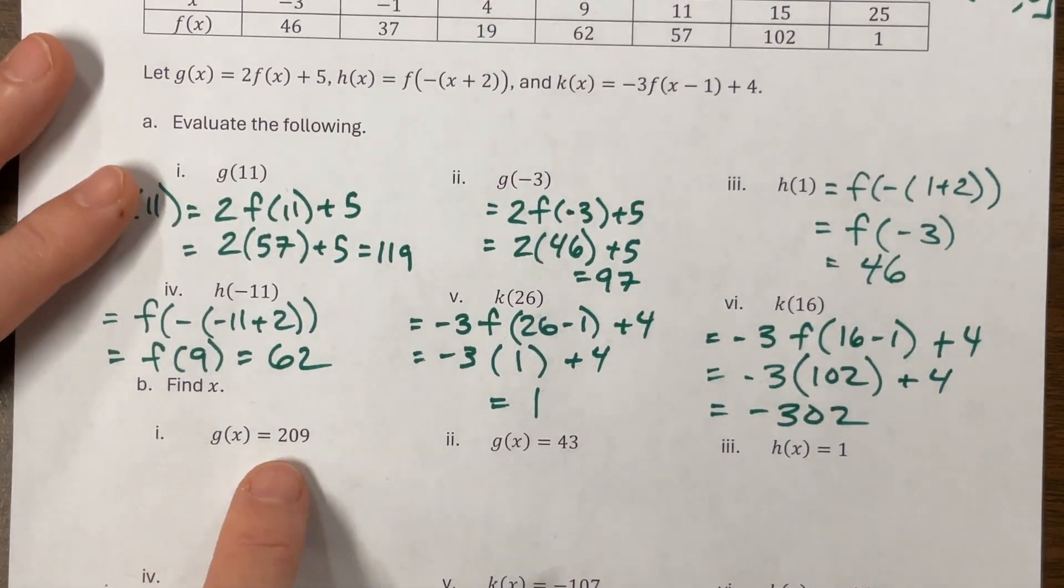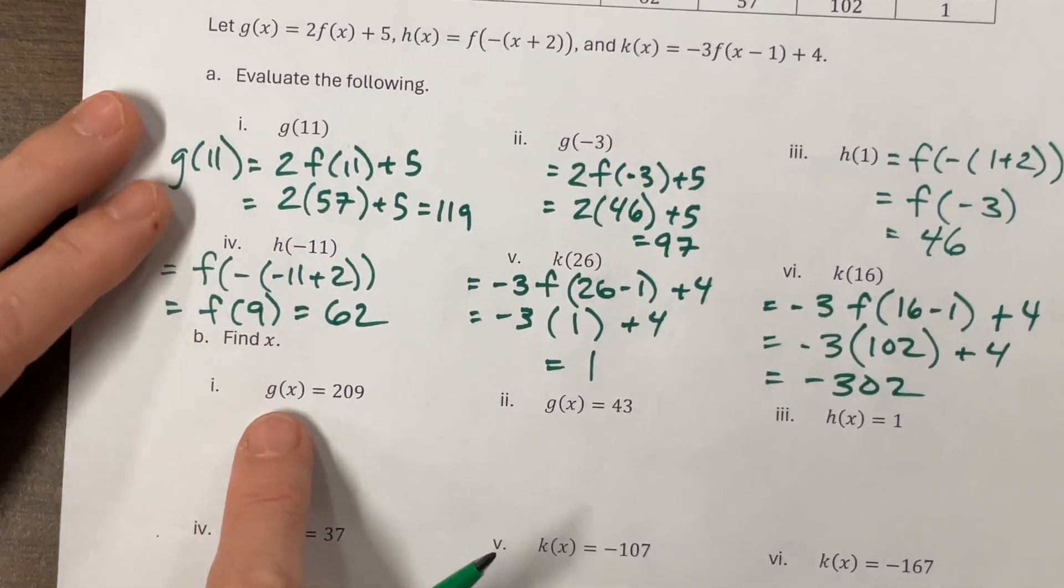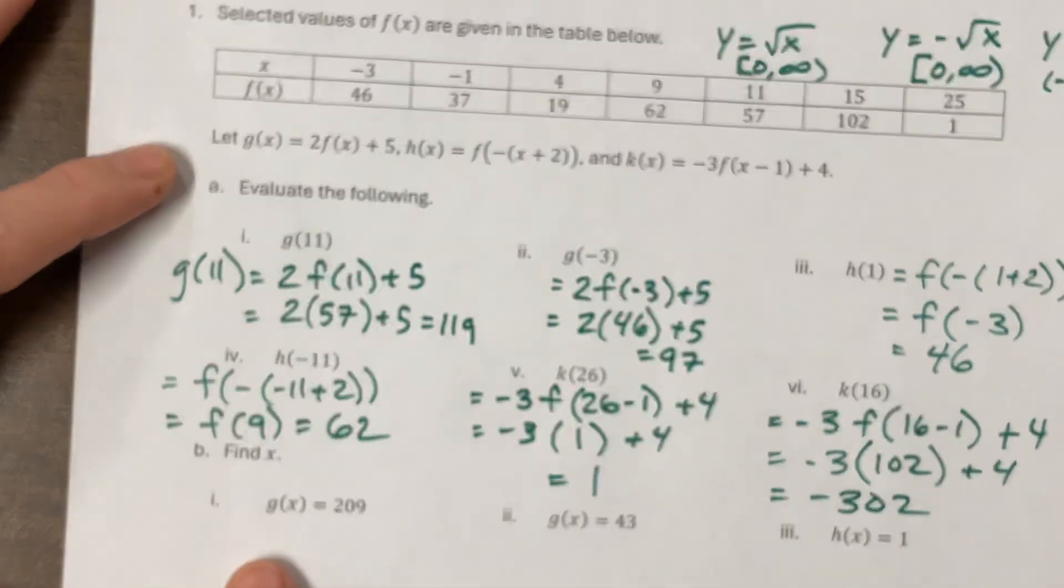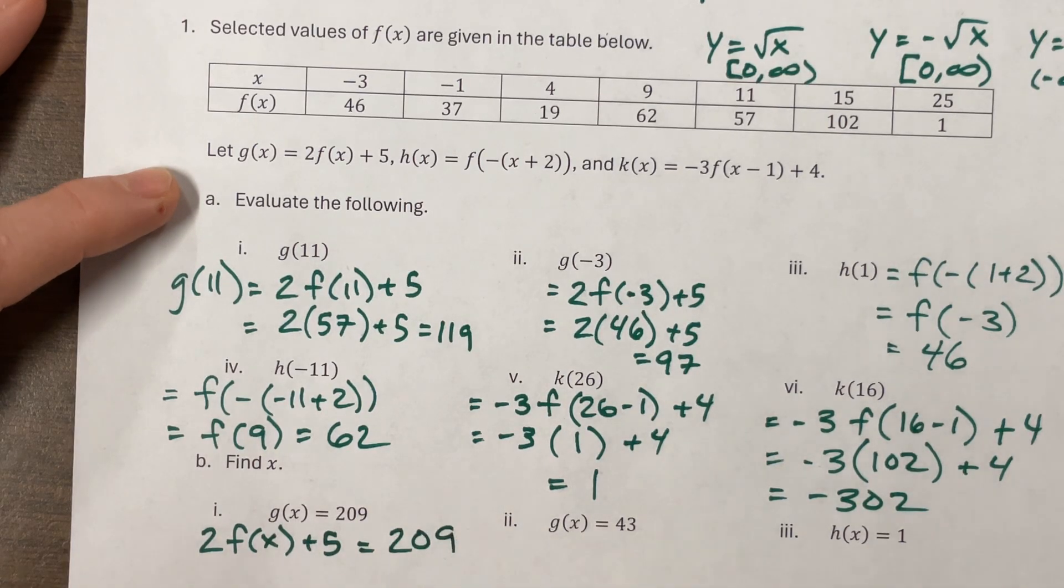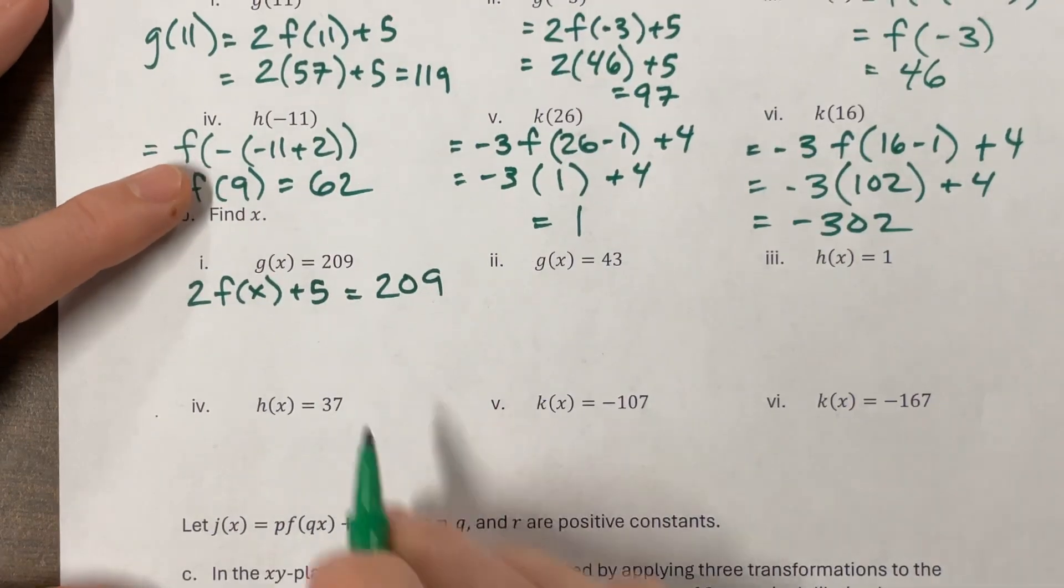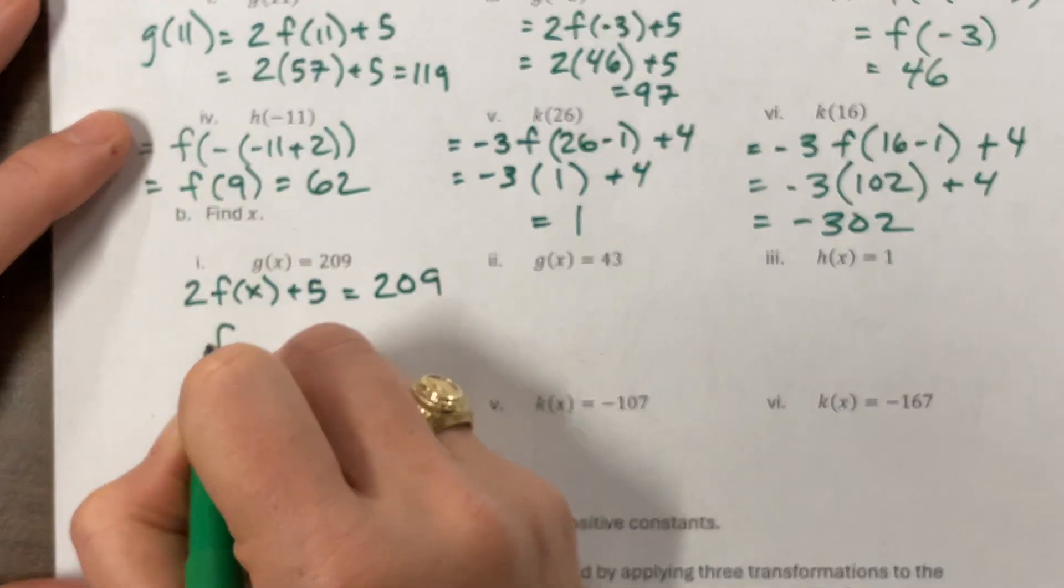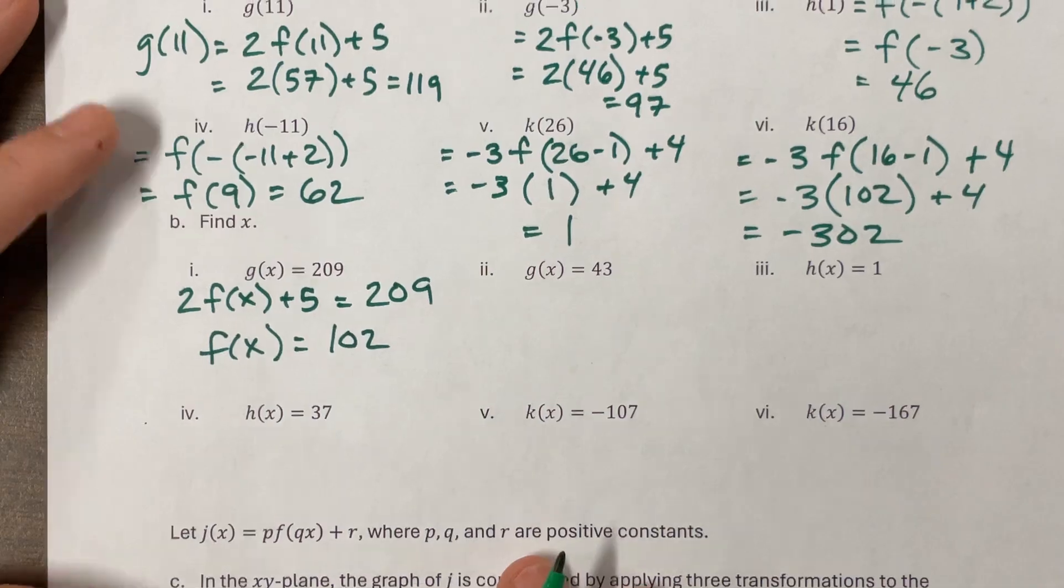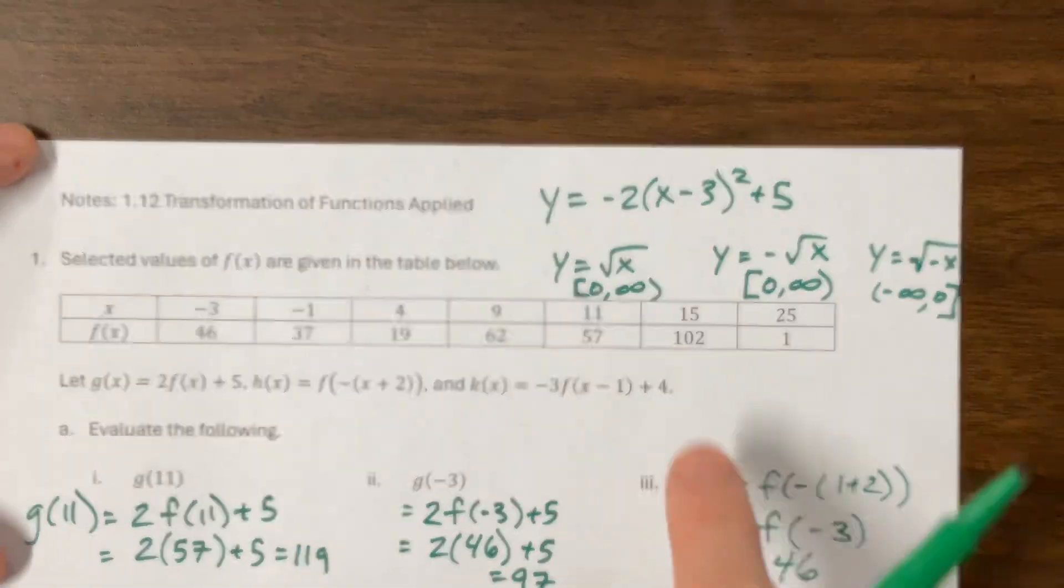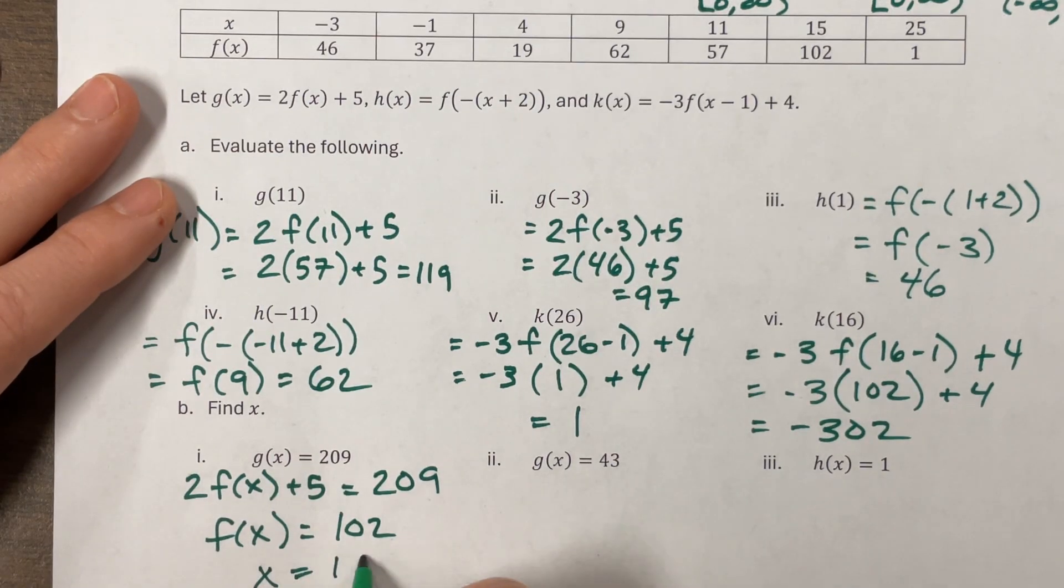So that first section was just plugging it in and evaluating. Now what we want to do is they've given us the y value and we need to find the corresponding x. And so with this one, our G of x, if you remember, was 2 F of x plus 5. And so this is now equal to 209. So I'm going to subtract 5. That gives me 204. Divide it by 2 and I get 102. So this becomes F of x is equal to 102. Well, hopefully that's in our table. It is. And it corresponds to when x is equal to 15. So x would equal 15.